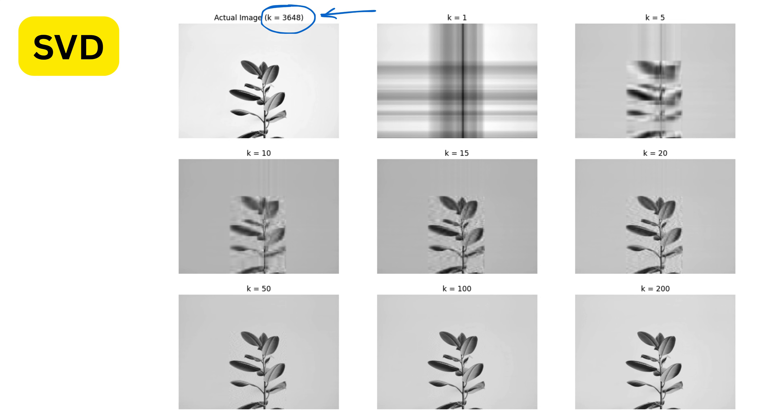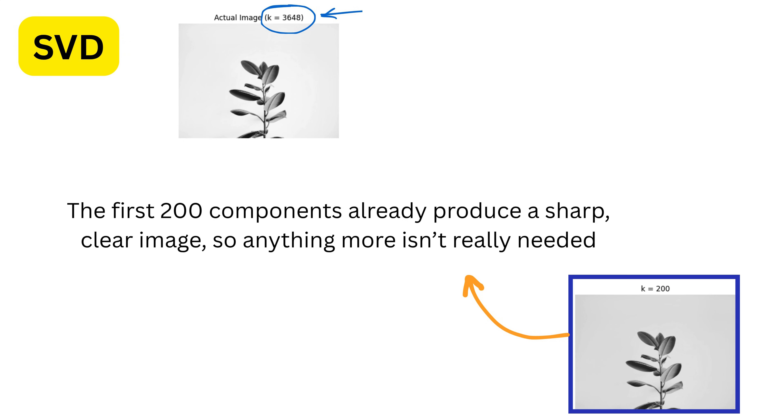But we don't actually need all of them, because most of the important structure of the image is already captured by the first few big sigma values. Isn't this super, super duper cool?